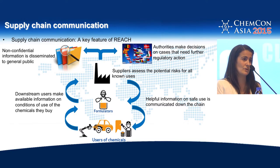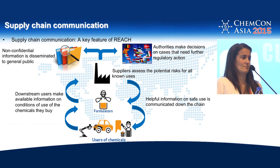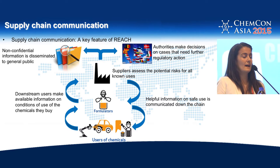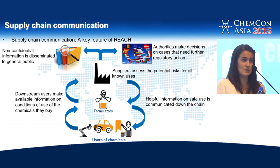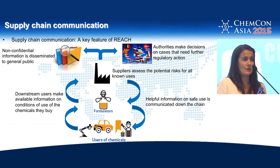I also wanted to speak about the top of this flow chart — the information that goes to authorities and to the general public. The registration process involves submitting dossiers to the authorities, and the authorities then look at them and do some screening. Hazard information is very important for this, but use and exposure information is equally important. If we want authorities to focus their resources on cases where it's really worth investing, they need to know not only the most hazardous substances, but also those substances that are used in a way that can present a risk.